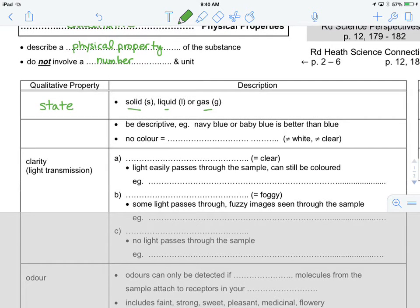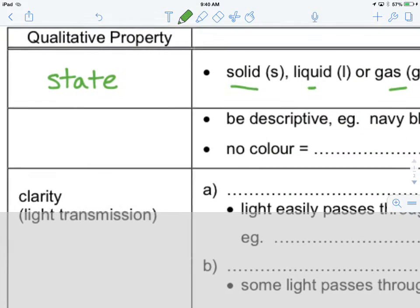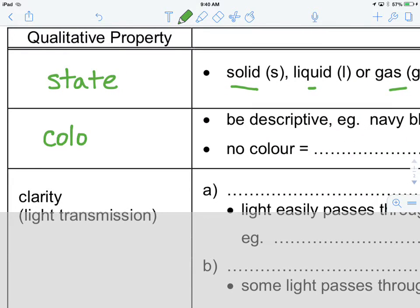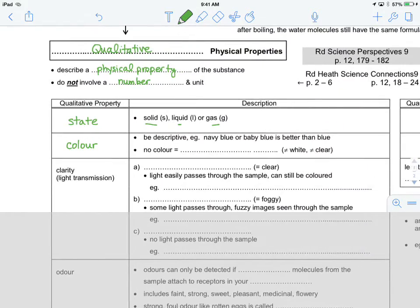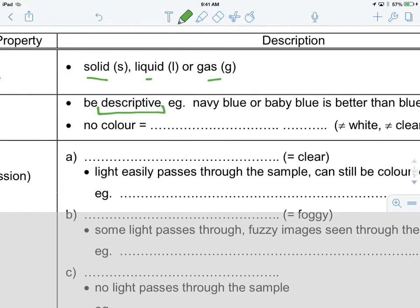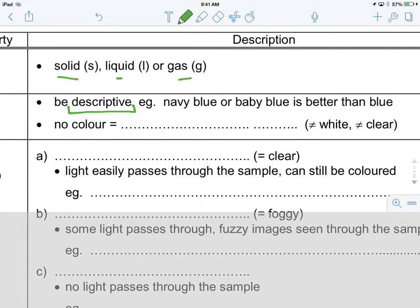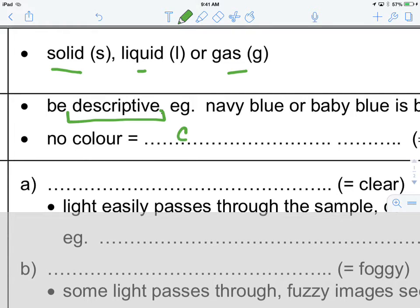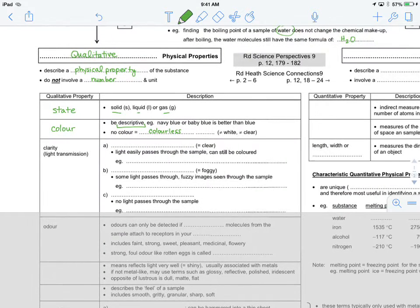Something else that we could talk about, a qualitative property, would be something navy blue or baby blue is better than blue. So, this would be color. We're talking about color here. Let's be very descriptive when we describe the color of an object. No color, we should point out, is not white and is not necessarily clear. No color we describe as colorless, which is quite different than white or clear.